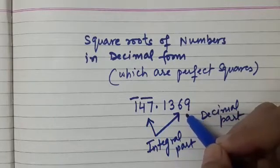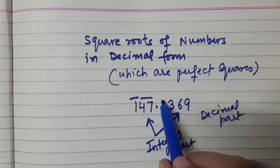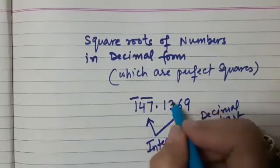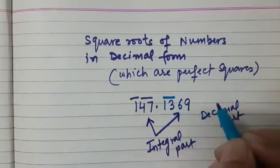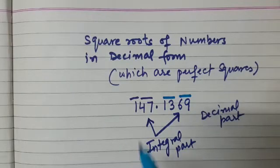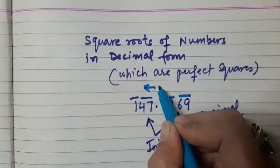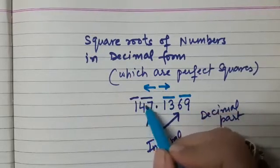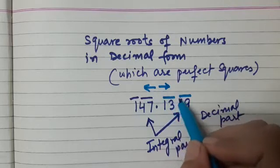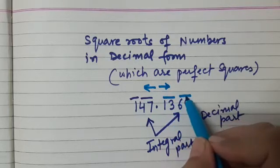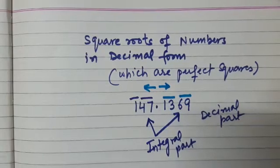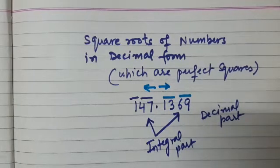Now after the decimal place, we have to start from the left side. So here we are going to make the periods from the left side. So 13 is the first period and 69 is the second period. I hope it is clear. So I am just putting this arrow so that you can remember this. For the integral part, we have to mark the periods from the unit digit. And for the decimal part, we have to start making the periods after the decimal part, that means from left to right. So first thing is clear, how do we mark the periods?